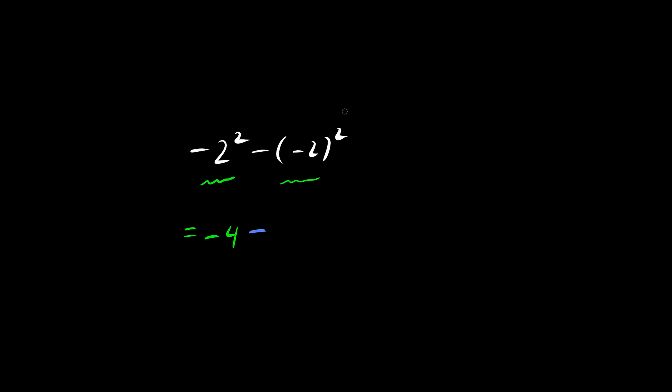What's negative 2 times negative 2? The answer is 4. So the final answer is negative 8.